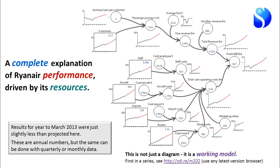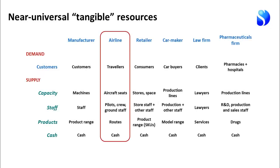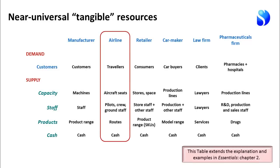This is not just a diagram of how the business works — it is a working quantitative mathematical model. The maths just follows the logic we've explained, and it is the first of a series of models about Ryanair. You just need any latest version browser to use the model. In the case of this airline: customers are people who travel with the airline, capacity is the number of aircraft and seats, staff are the pilots, crew and ground staff, and the product range is the routes it offers — plus the company has cash. Those turn out to be pretty universal tangible resources that apply to almost any business.